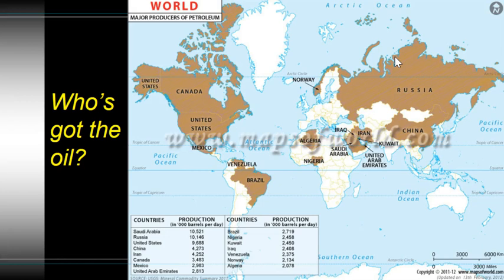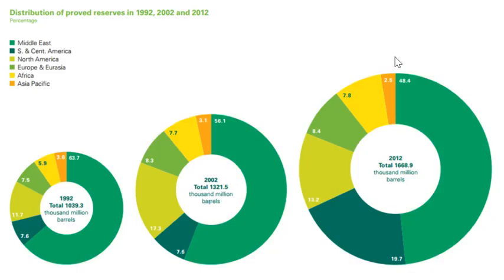Saudi Arabia has the most oil, followed by Russia, with the United States third. China, Iran, Canada, Mexico, UAE, and Brazil all fall into the next category. The Middle East historically has had the bulk of oil reserves, though that proportion is declining compared to others because new technologies have opened up new channels for oil production, specifically in Central and South America.